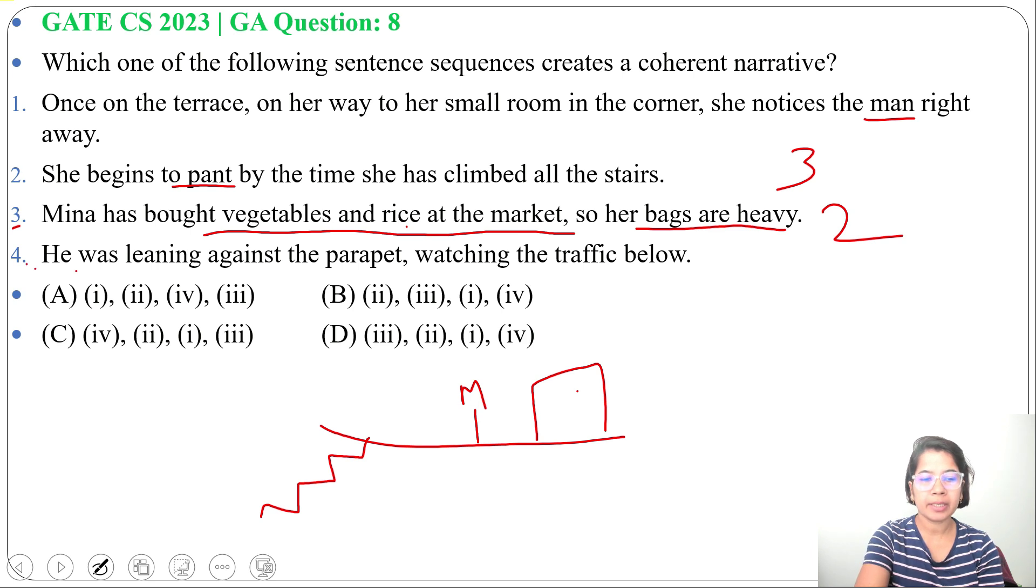Next, fourth statement: he was leaning against the parapet and watching the traffic below. So on the terrace, that man was leaning to the parapet and watching the traffic below.